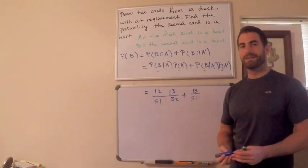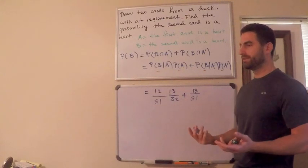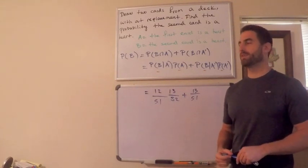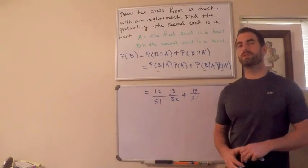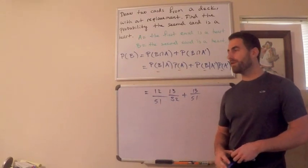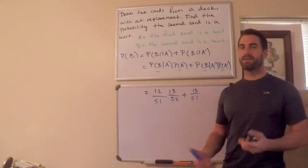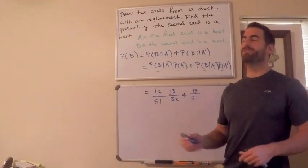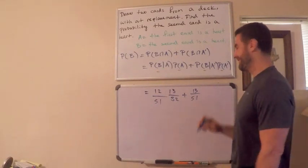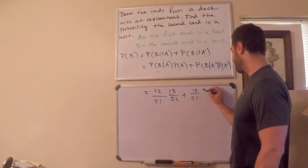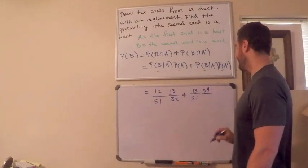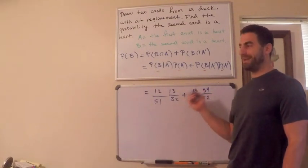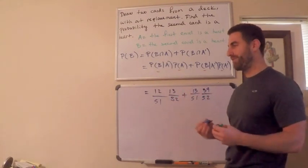The last piece is P(not-A) — the probability the first card is not a heart. There are 52 cards total, 13 are hearts, so 52 minus 13 equals 39. That gives us 39 out of 52. That's the annoying arithmetic part.